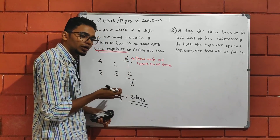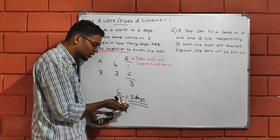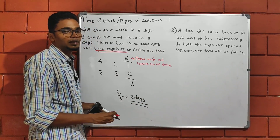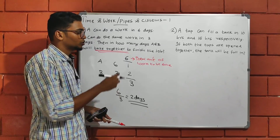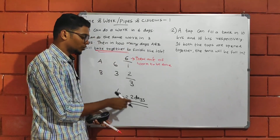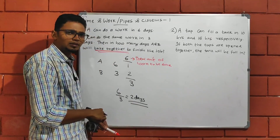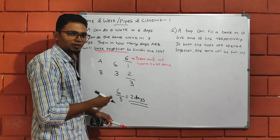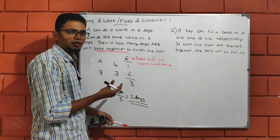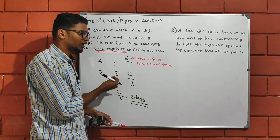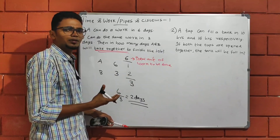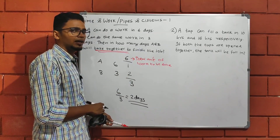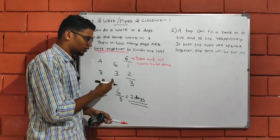We have to do this for 3 days, so we get 6 divided by 3, which equals 2 days. How many days will A and B take together to finish the job? The answer is 2 days! This is the LCM method.